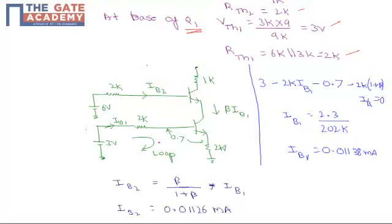By applying KVL for this loop, we can write: 3 - 2kΩ×IB1 - 0.7 - 2kΩ×(1+β)×IB1 = 0, where 0.7 is the VBE value.